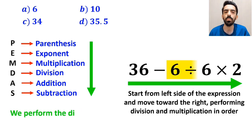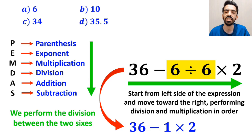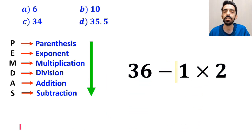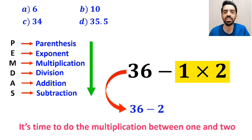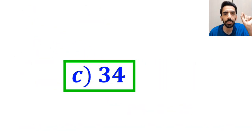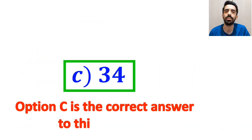So first we perform the division between the two sixes, and this expression simplifies to 36 minus 1 times 2. Now, it's time to do the multiplication between 1 and 2, which gives us 36 minus 2. And finally, the value of this expression is equal to 34. Therefore, option C is the correct answer to this question.